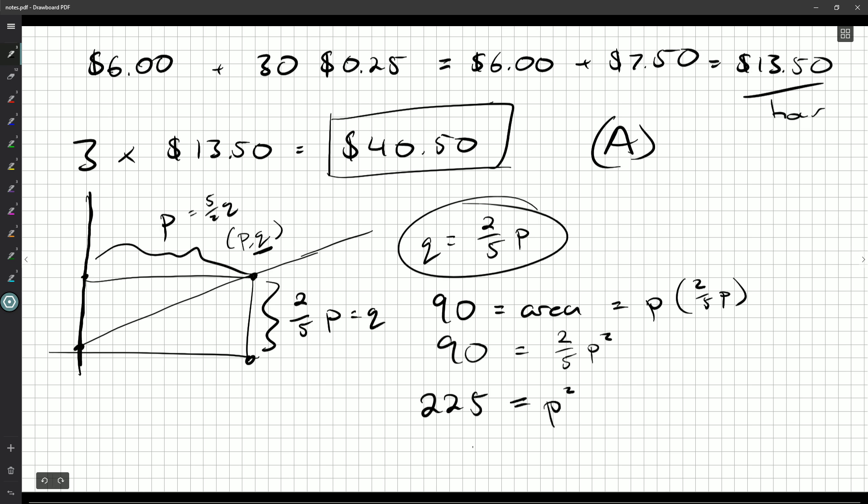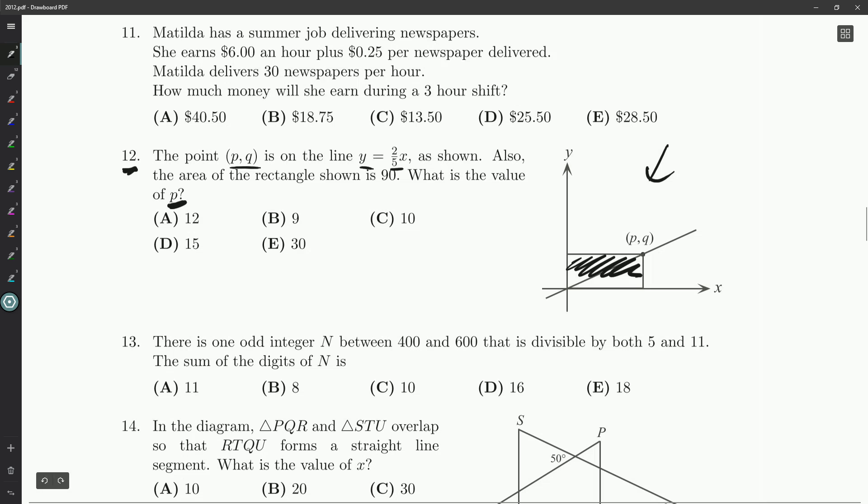P is either going to be 15 or -15. But we can tell from the picture that P is over here. We're in the first quadrant. Both the coordinates are positive. So we just need positive 15.